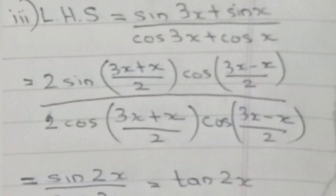3. LHS = (sin 3x + sin x)/(cos 3x + cos x) = [2 sin(2x) cos(x)] / [2 cos(2x) cos(x)] = sin 2x / cos 2x = tan 2x = RHS.